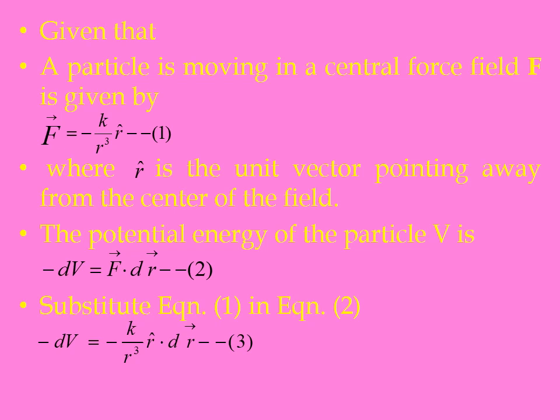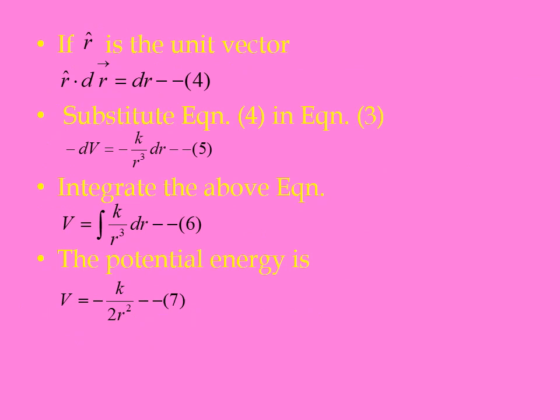So substitute this value in this equation. Minus dV equals minus k by r cube r cap dot dr vector, and r cap is the unit vector.